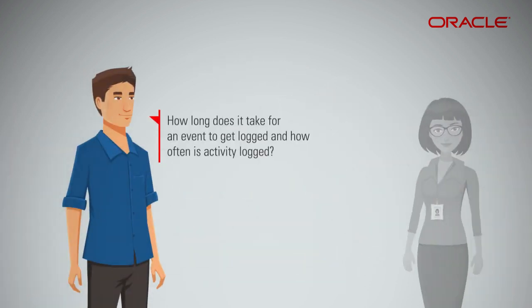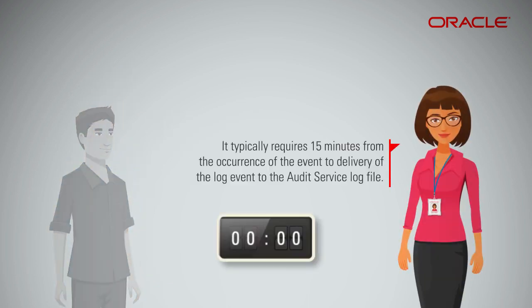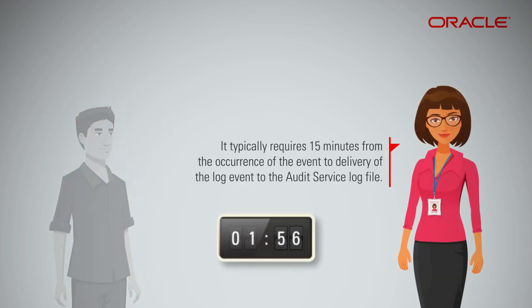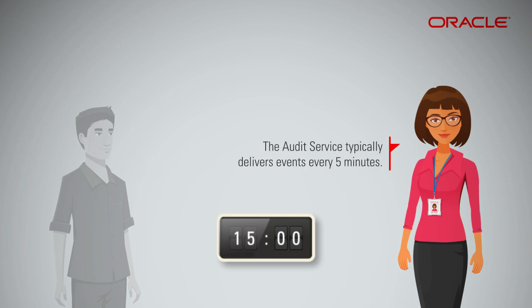How long does it take for an event to get logged, and how often is activity logged? It typically requires 15 minutes from the occurrence of the event to delivery of the log event to the audit service log file. The audit service typically delivers events every five minutes.